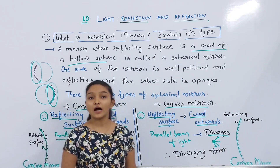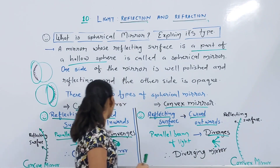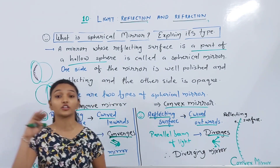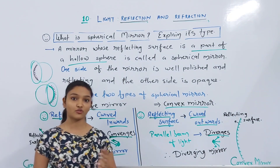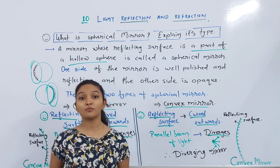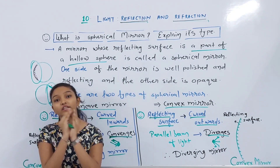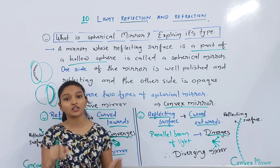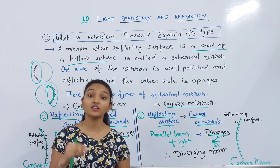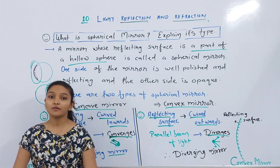Here is a memory trick — how do you remember concave versus convex? The word 'concave' has a gap — you go inside the gap — so remember that the reflecting surface of a concave mirror is curved inwards. Convex is curved outwards.